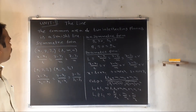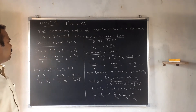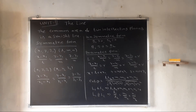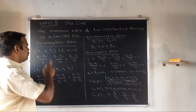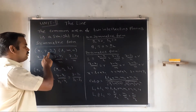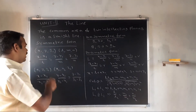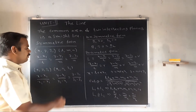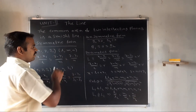This is the symmetric form of a line equation. The point on the line is (x1, y1, z1), and l, m, n are the direction ratios. The line equation in symmetric form is: (x − x1)/l = (y − y1)/m = (z − z1)/n. This is the symmetric form.